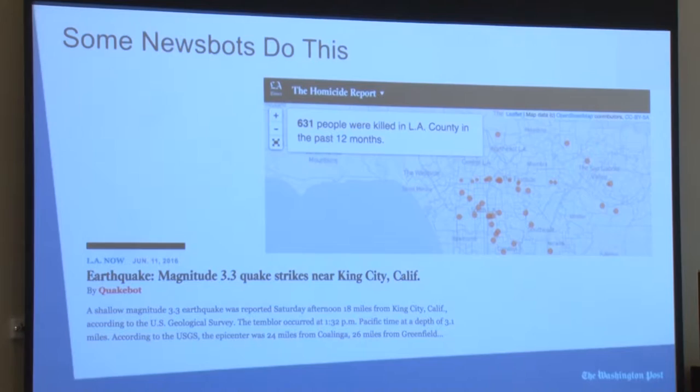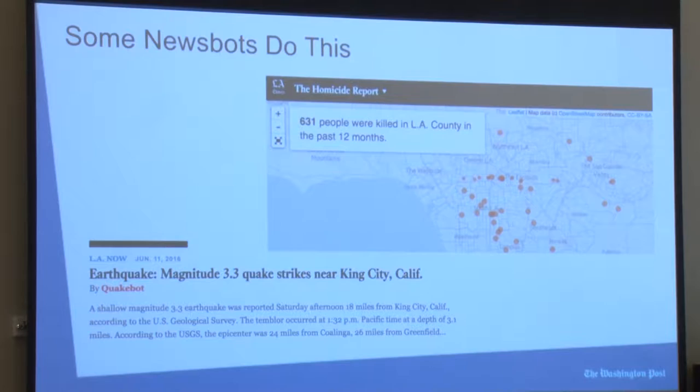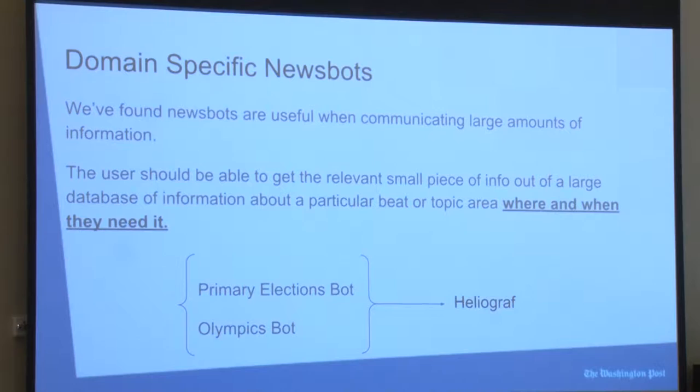Two great examples of such bots are the Homicide Report and QuakeBot from the LA Times. The Homicide Report follows police blotters to write an article every time a murder is reported. The QuakeBot monitors seismic activity to report as or before an earthquake occurs, often being one of the first articles to do so. Both of these bots are specific to a single domain and provide an invaluable service to readers. News bots are useful when communicating large amounts of information, often changing over time.